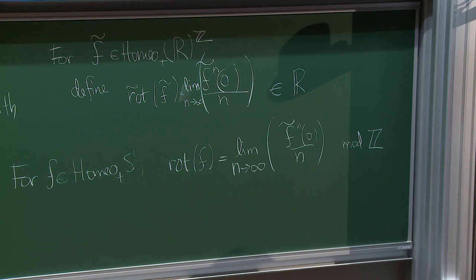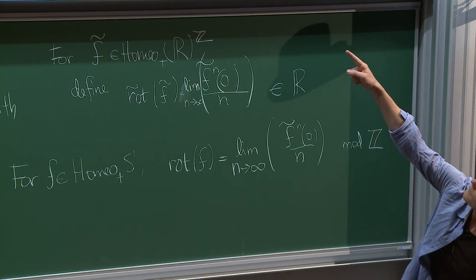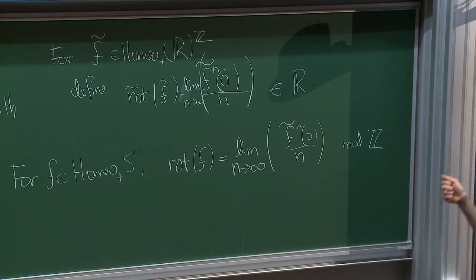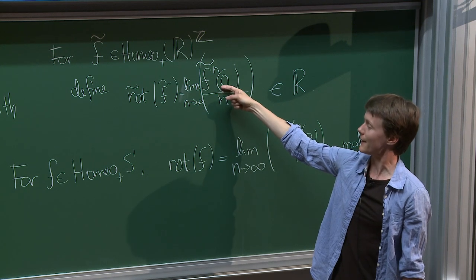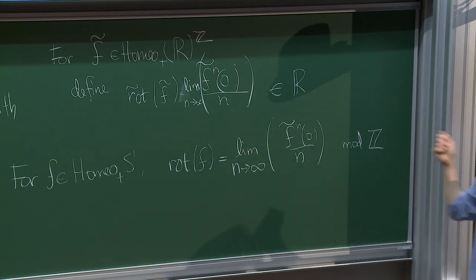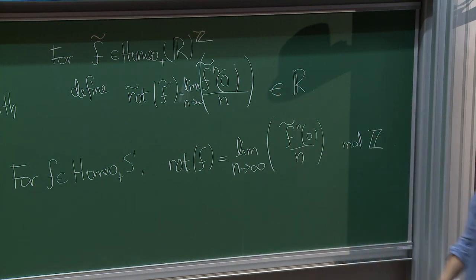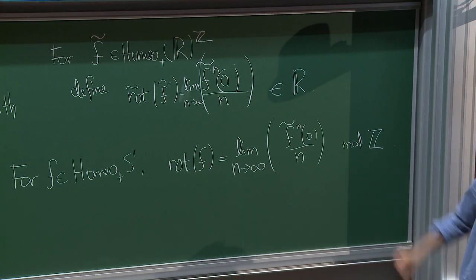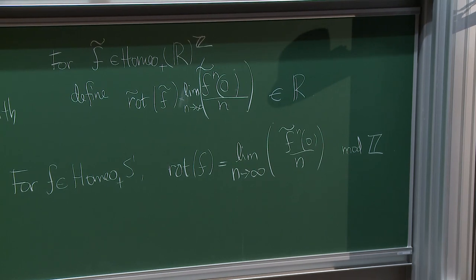A quick mental check: the rotation x ↦ x + ½ mod 1 should give rotation number ½. Taking the lift x ↦ x + ½ and iterating n times gives n · ½ at 0; dividing by n gives ½ — no limit needed. So the rotation number of rotations is exactly what you'd expect. In general the rotation number of rigid rotations is the rotation angle.